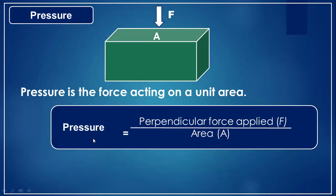This is the equation for solid pressure: perpendicular force F divided by surface area. As you can see, the area under the box is surface area A and the applied force is F. You can easily calculate the solid pressure by F divided by A.